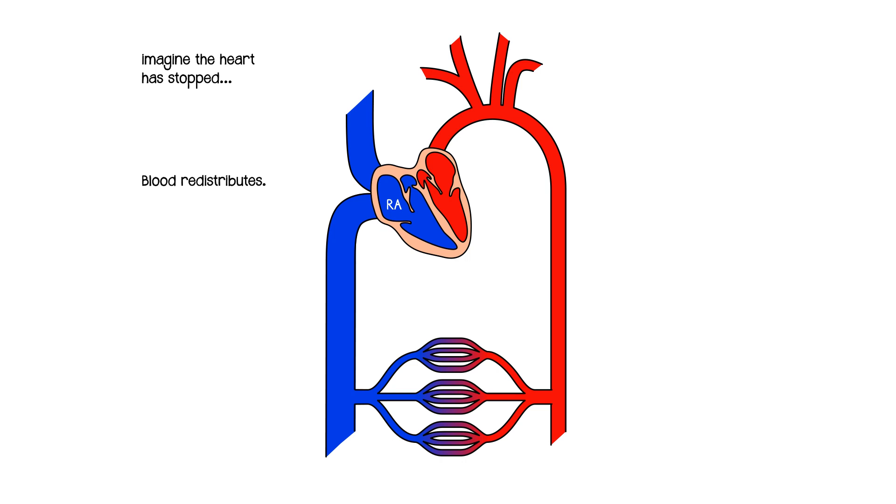So it turns out that if the heart does stop, if the blood does redistribute, there will be a pressure in the cardiovascular system, and it will be the same pressure everywhere. That pressure is around 7 millimeters of mercury. Of course you can translate that into kilopascals if you need to, using the appropriate formula.